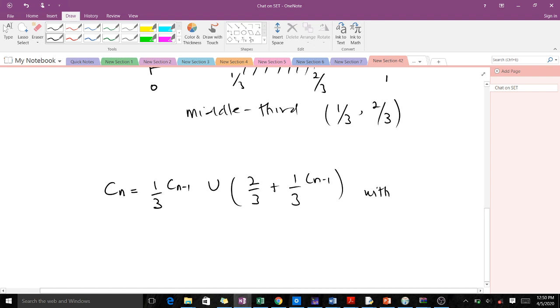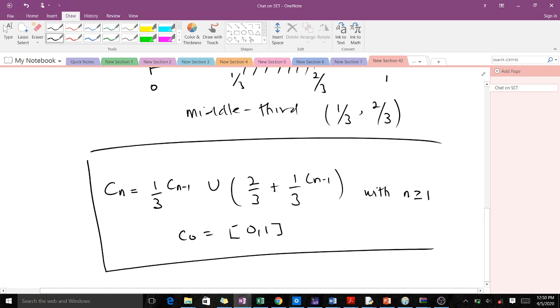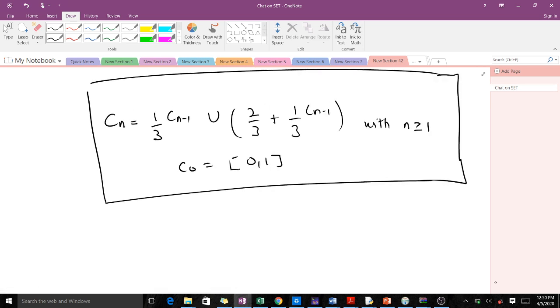This holds for n ≥ 1, and C_0 equals the closed interval [0,1]. This is the formula for the Cantor set. With this formula, we are sometimes asked to find C_1, C_2, C_3, and so on.